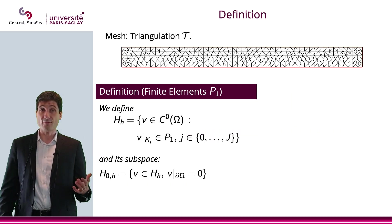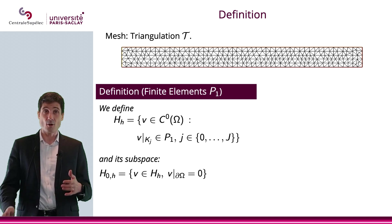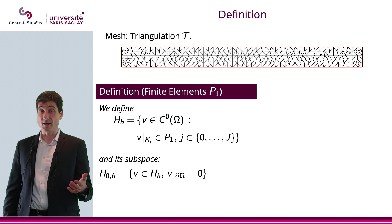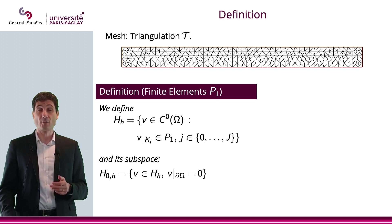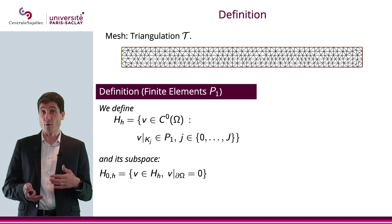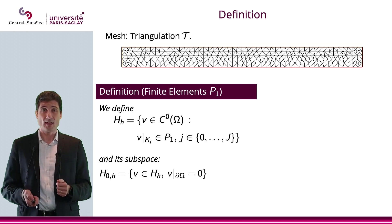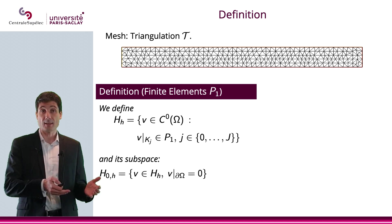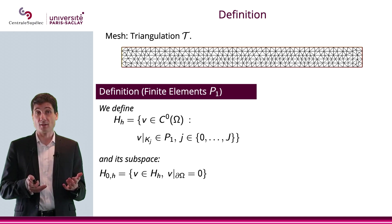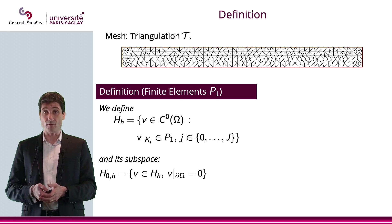So let me first define the finite element P1 in this context. We're going to define HH as the space of all functions V that are continuous, such that the restriction to an element, to a triangle, is in P1. In other words, it has to be a polynomial of degree 1. And we're going to consider the subspace, which will be H0H, which will be all the functions V in HH that will also vanish on the boundary.